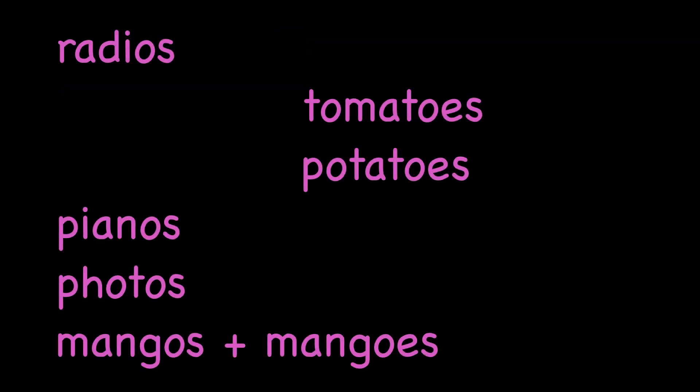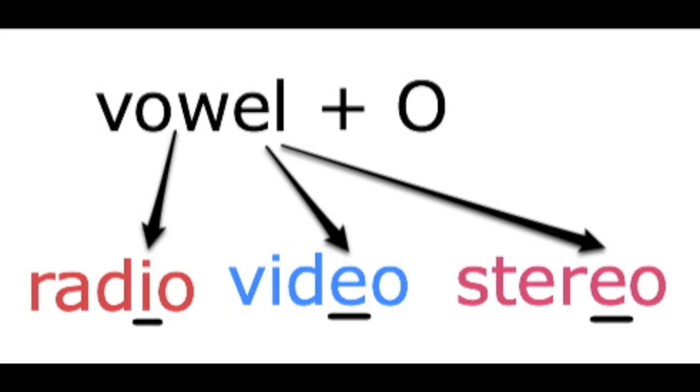Well, we're going to go over some of the rules, but remember, like all spelling rules there are always exceptions and we'll look at those too. Let's look at rule number one. Words ending with a vowel — that's A, E, I, O, U — plus O, so vowel plus O, we always add S.